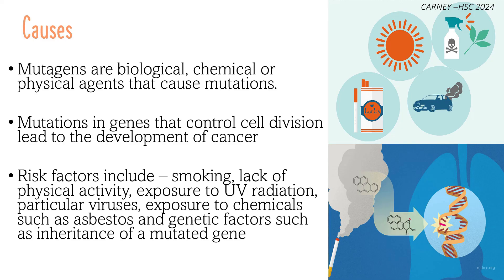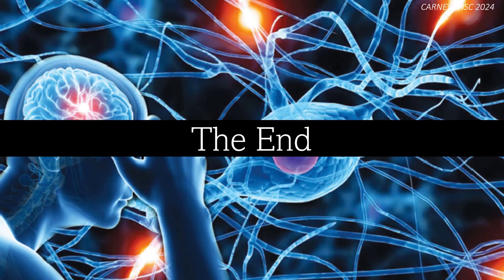Risk factors such as smoking, lack of physical activity, exposure to UV radiation, particular viruses, exposure to chemicals such as asbestos, and genetic factors such as the inheritance of a mutated gene, all play a role in how a cancer can develop. And that is the end of episode four. Thank you for watching.